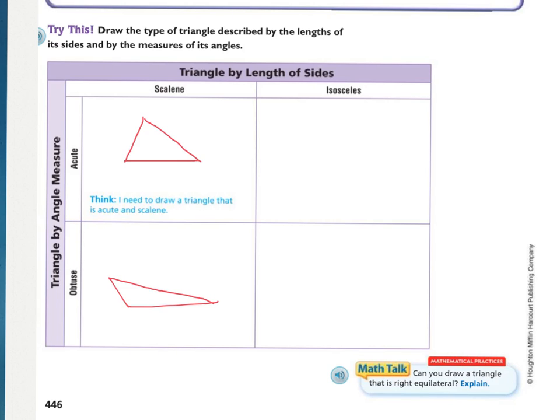Here are my examples. With a ruler, make sure your side lengths are all different for the scalene triangles. I have three acute angles in one, and for the obtuse I do a really short and a really long line, making sure that is my obtuse angle, then connect them. Here are my two isosceles triangles — these two sides are the same length, and this angle is larger than 90 degrees.